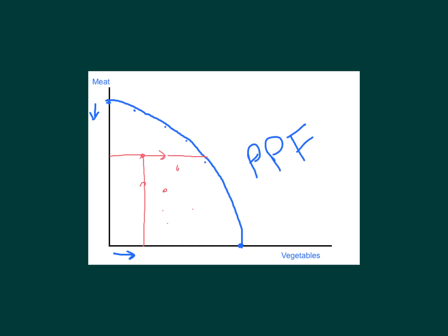Once you get onto the PPF, the only way to get more vegetables is to give up some meat — that's where you start to see the trade-off. Those points are considered efficient because you have no resources going unused. Points inside the PPF are possible or feasible but inefficient — it shows you're not using your resources completely, maybe you have unemployment of resources.